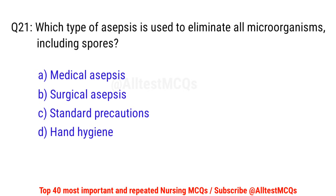Question No. 21: Which type of asepsis is used to eliminate all microorganisms including spores? The correct option is B: Surgical asepsis.